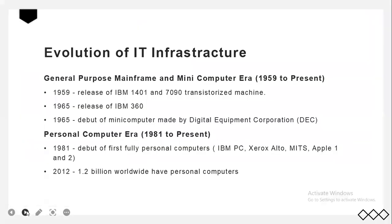Next is how IT infrastructure evolved. Today's IT infrastructure in business is the result of more than 50 years of advancement in computer platforms. It has five stages, each one corresponding to a distinct arrangement of infrastructure and computing resources. Let's take a look back at the different eras, starting with 1959 to the present.